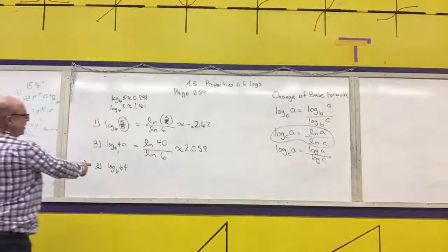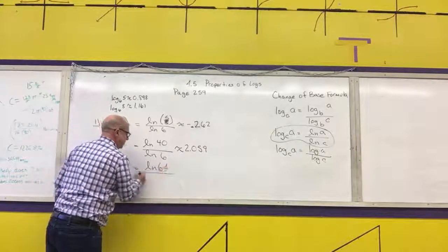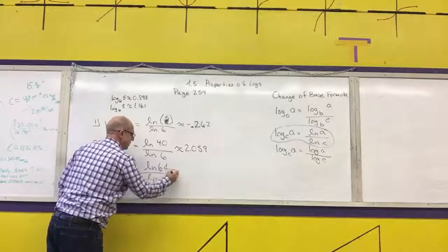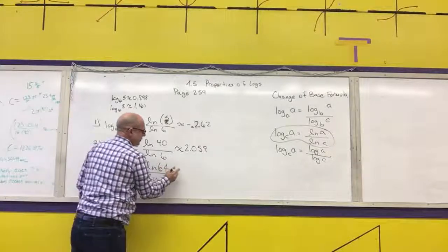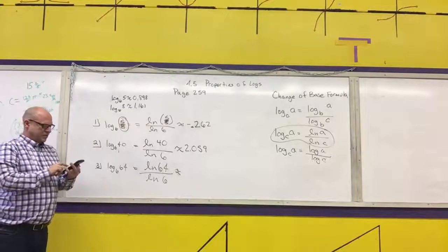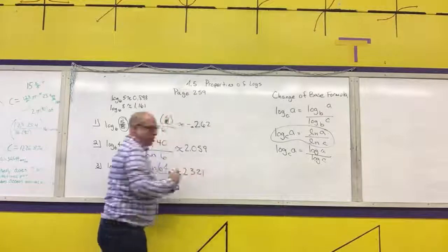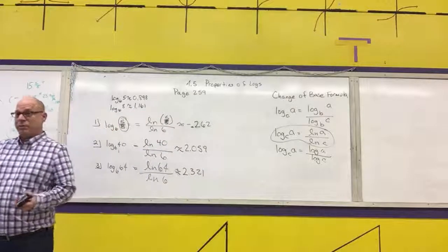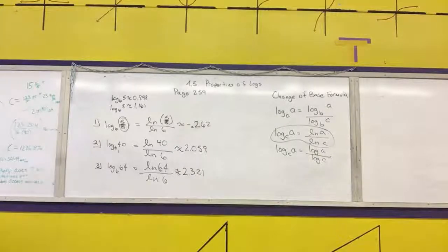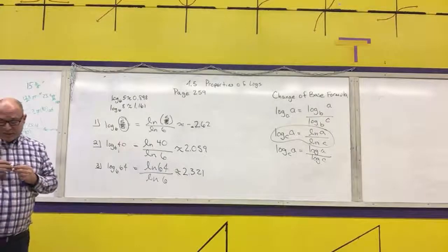How about this one? Natural log of 64 divided by natural log of six. 2.322. And what did we have before? 2.322. They only gave you a three-digit approximation before. Your calculator has the full table of values in it. That's why it's getting us slightly off in that third decimal point. Does anybody have any questions on changing the bases?